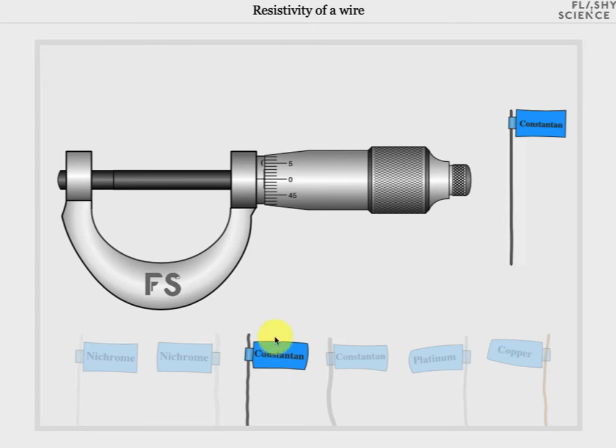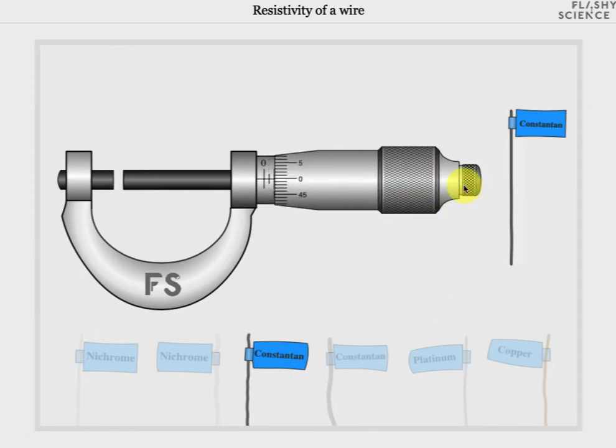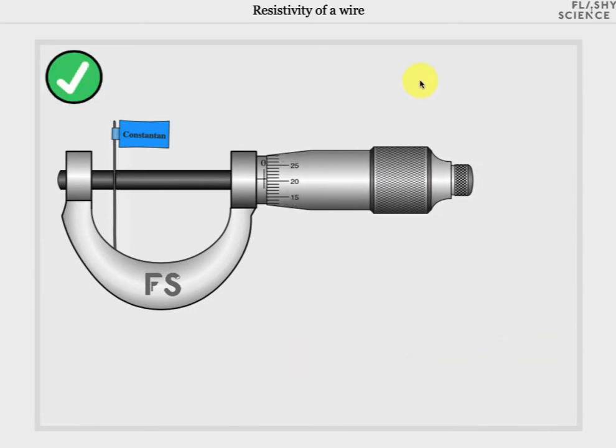Before placing this in the experiment, we have to measure its width with the micrometer that's on the screen. First, open the micrometer by clicking and dragging down the thumbwheel region here. This opens the micrometer. Then click and drag the wire so that it snaps into place in the micrometer, and then click and drag the thumbwheel up this time to close the micrometer around the sample wire.